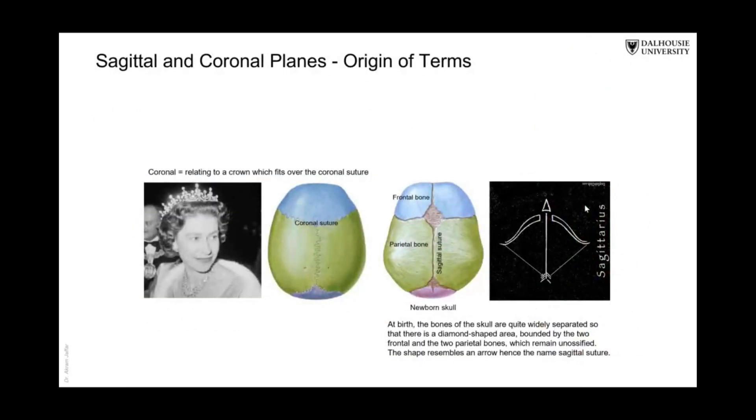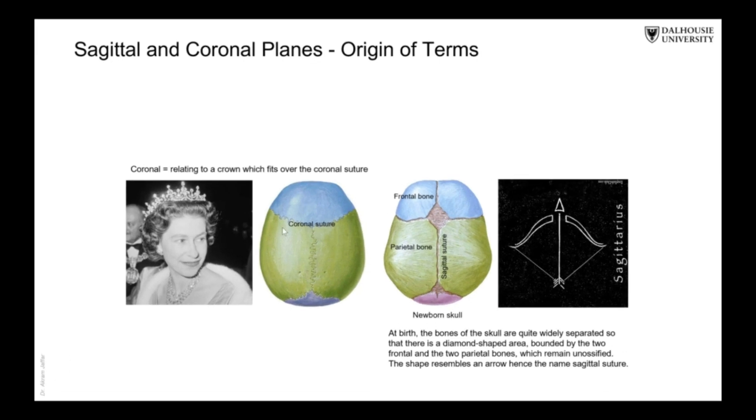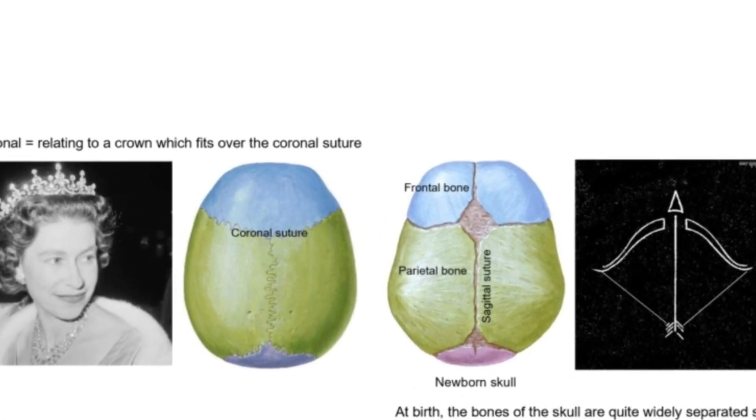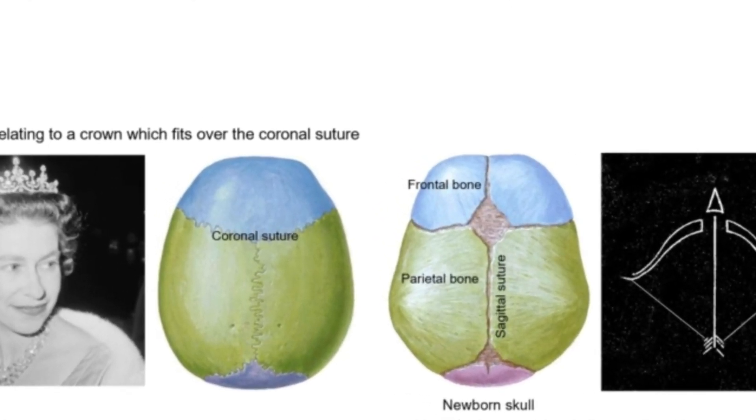This is the origin of the coronal and sagittal planes. This is what we call the skull cap or the calvary of the skull. We are looking at the skull from above. And this is the skull after two years of age. But here, this is the newborn skull.